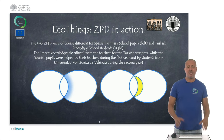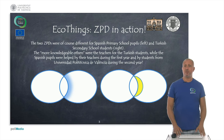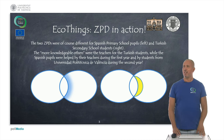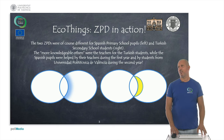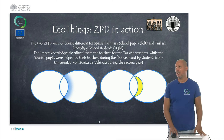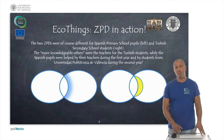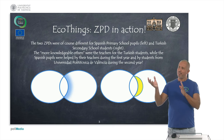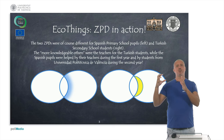As you can see in the picture, let's retake the Venn diagrams from the previous video. On the left we have the Spanish students and their zone of proximal development, which is the blue area. On the right you have the Turkish students' ZPD, highlighted as a yellow area. The yellow area in Turkey was stretched by using teachers as more knowledgeable others.